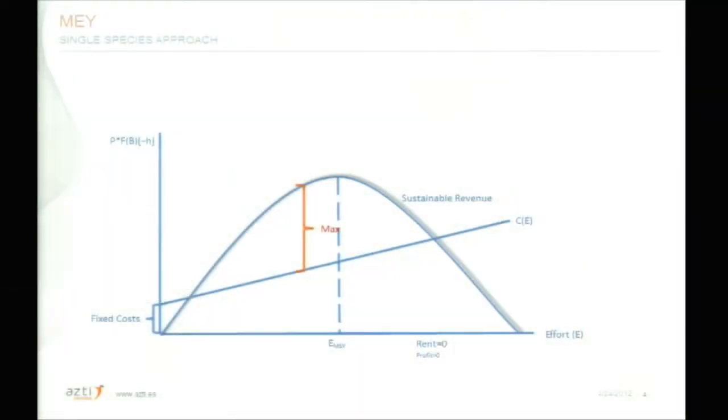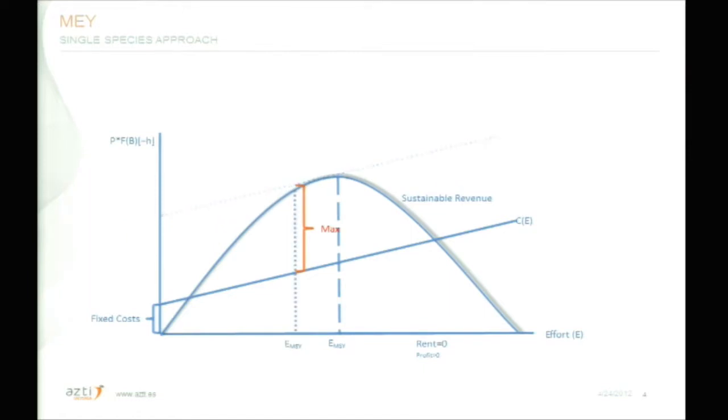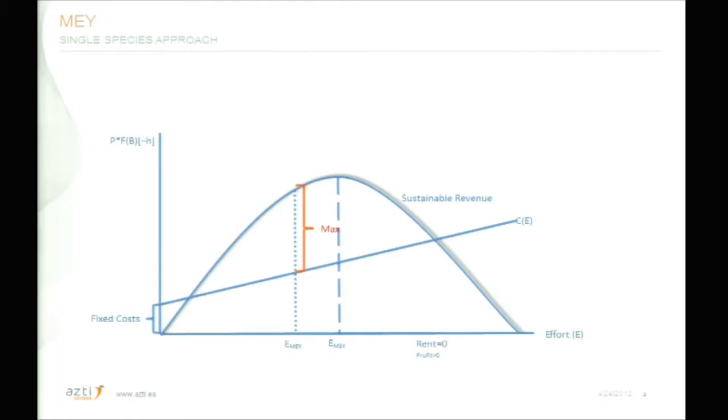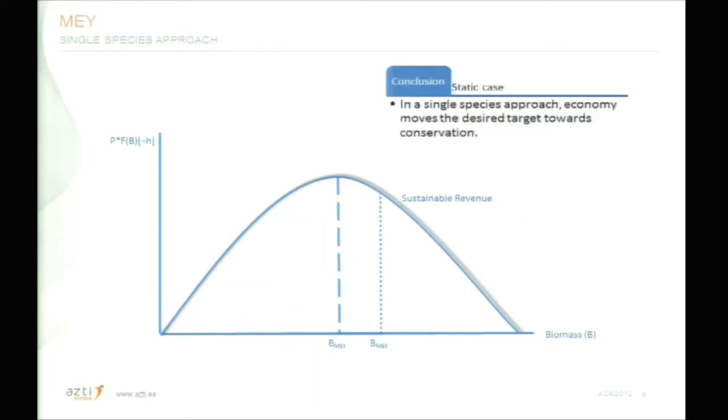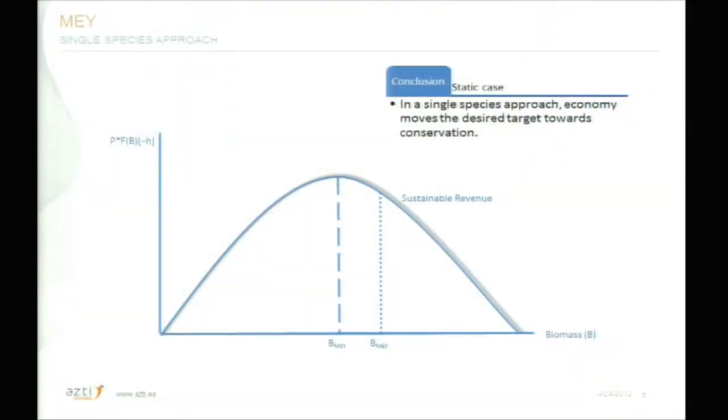In terms of MEY, what we want to do is to maximize the difference between the revenue and the costs. Doing so, we obtain the effort value related to the MEY. If we look at it from the biomass point of view, we have the first conclusion of this single-species, static case: in a single-species approach, economics moves the desired target towards conservation.